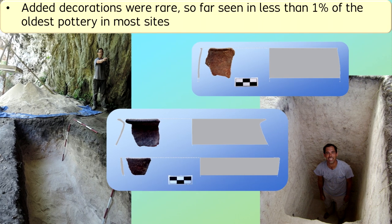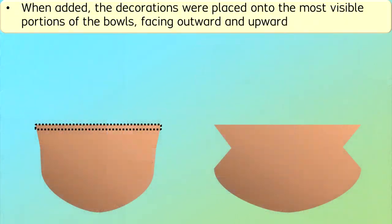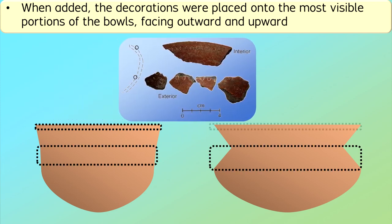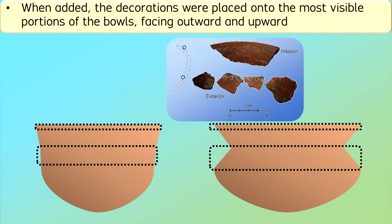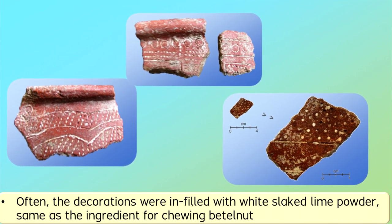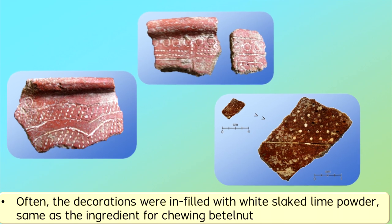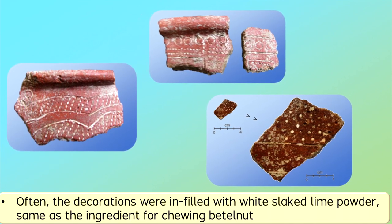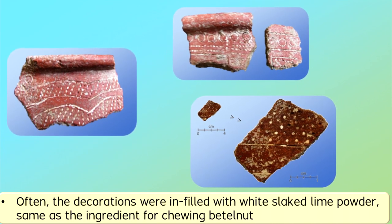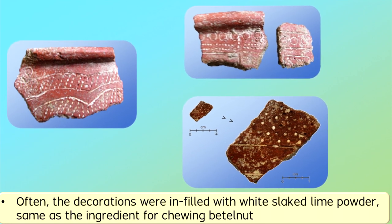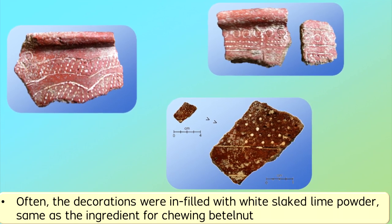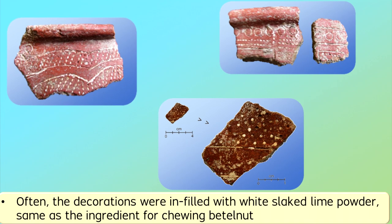People applied the decorations onto the most easily visible portions of the pottery, specifically on the outward-facing or upward-facing portions. Often, the decorations have shown traces of white slaked lime, sometimes known as hydrated lime, made by burning limestone or marine shells and then quenching the material in water. Traditionally, slaked lime has been part of the recipe for chewing betel nut in the Asia-Pacific region. In the case of the earliest Marianas pottery, people used the same slaked lime for infilling into the decorations, thereby creating a sharp contrast against a red-slipped surface or against a black burnished surface.